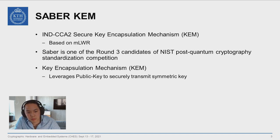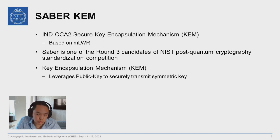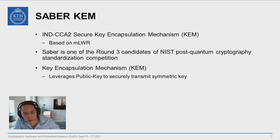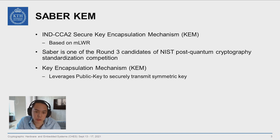SABER belongs to a group of lattice-based cryptosystems. It relies on module learning with rounding, which is a modification of learning with errors. The fuzziness comes from lopping off a few bits off of each coefficient, rather than sampling from an error distribution.